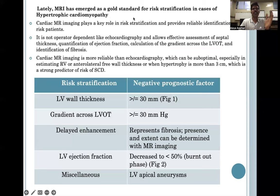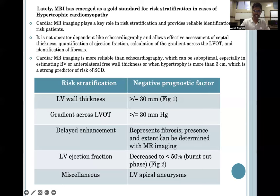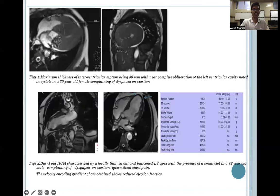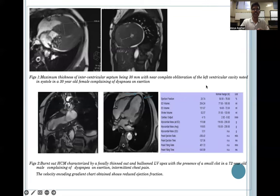Cardiac MR has emerged as a gold standard for risk stratification in hypertrophic cardiomyopathy. LV wall thickness greater than 30 mm is a negative prognostic indicator. A gradient across LVOT of 30 mmHg or more is also a negative prognostic indicator. Delayed enhancement showing fibrosis is likewise a negative prognostic indicator. LV ejection fraction may be decreased in HCM in its burnt-out phase. One figure shows gross thickening of the interventricular septum at 30 mm with near-complete obliteration of the LV cavity in a 30-year-old female, while another shows burnt-out HCM with focally thinned and ballooned LV apex with a small clot in a 72-year-old male, with a decreased ejection fraction of 25%.